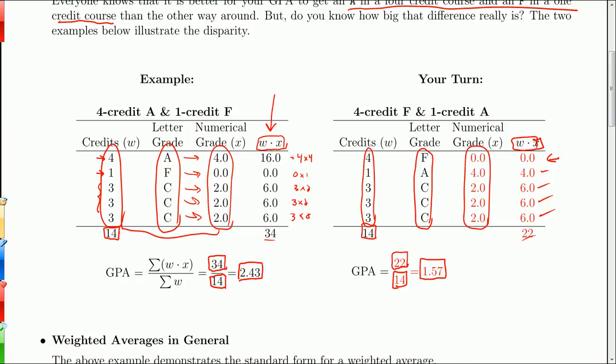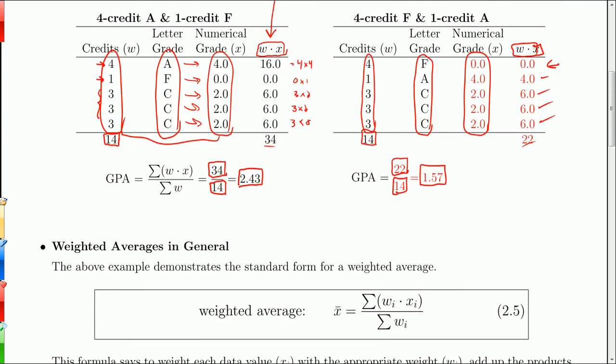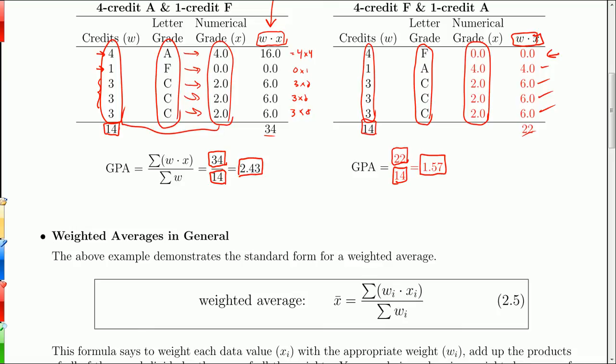All right, so clearly you did a lot better. Same looking report card if you don't look at the credits. But you certainly did a lot better with that A in the 4-credit course than you did with the A in the 1-credit course. And this demonstrates what's known as a weighted average.